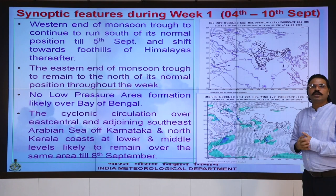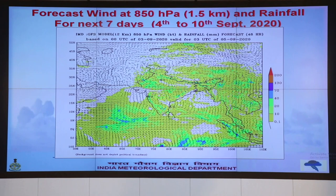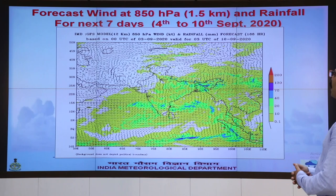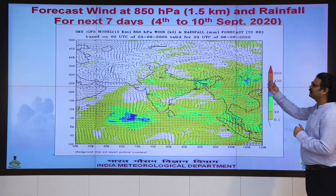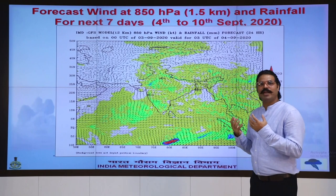The eastern end of the trough is also in its normal position. Looking at the forecast 850 hPa winds and rainfall, we can see no blue or red patches for the entire 7 days, meaning no heavy or very heavy rainfall will occur during the next week.